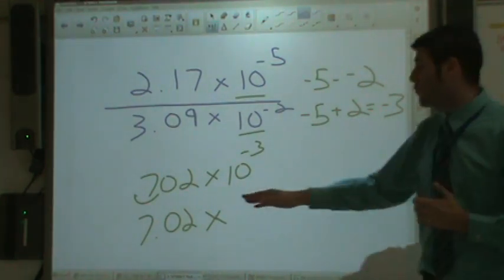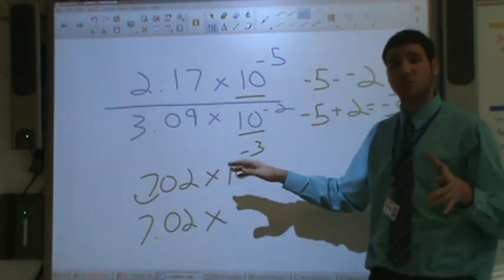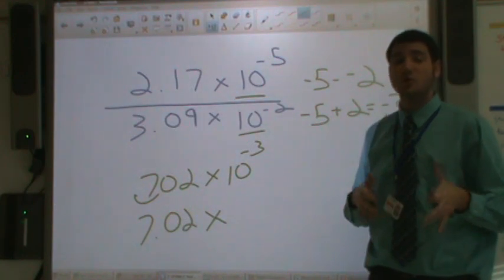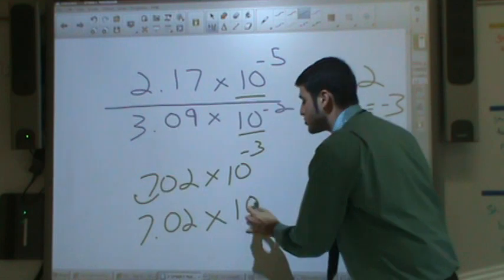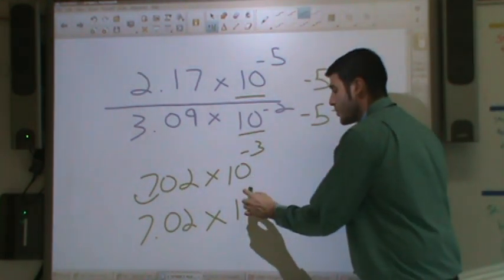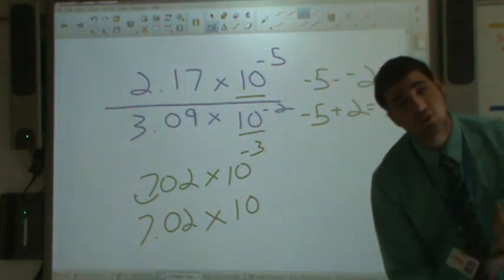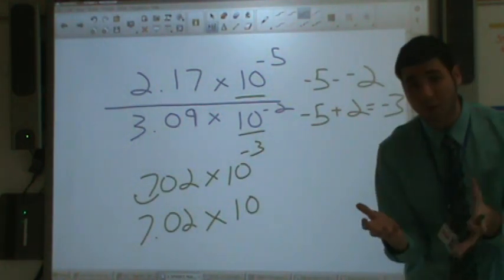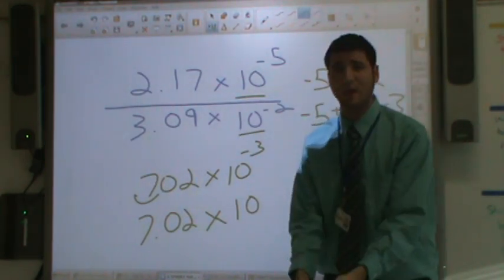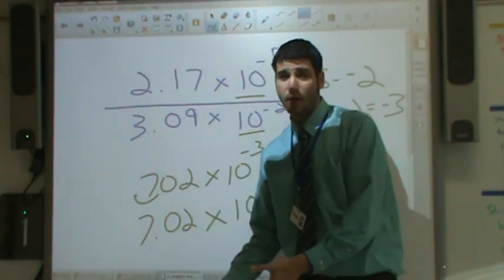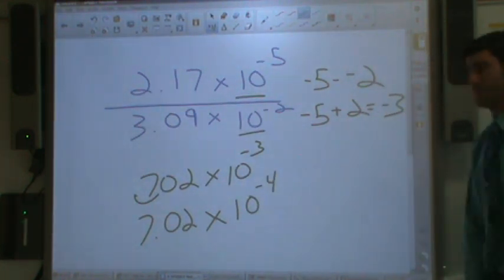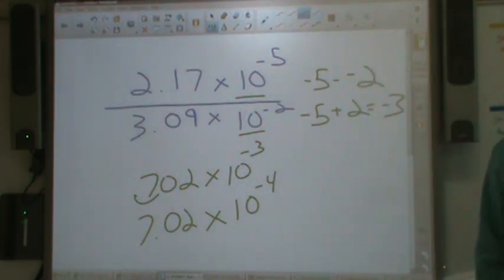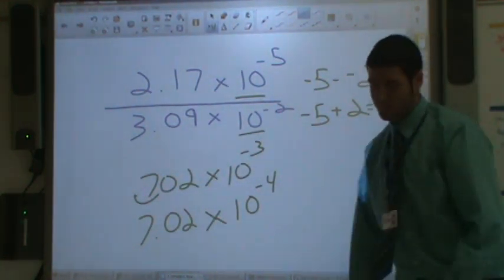We're going to move that decimal place over one. So now we have 7.02. Since we moved it over one, we have to make sure we're not really changing the answer, just changing the way it looks. So if we move it over one, we have to subtract one from the exponent. So negative three minus one. Do not say negative two, please. It is not negative two. If you lose three dollars and then you lose another dollar, how many dollars are you down? You are down four dollars. Again, do not say negative two. I know that's what you were thinking and you're wrong. And if you didn't, good job.